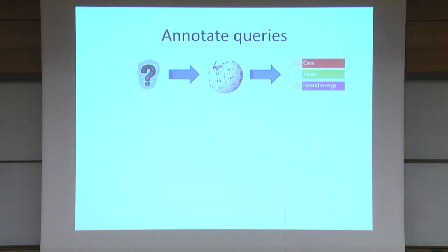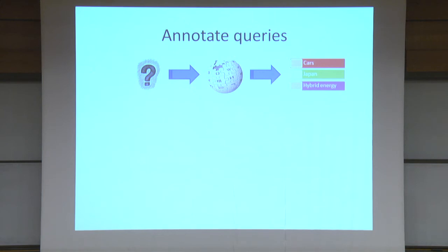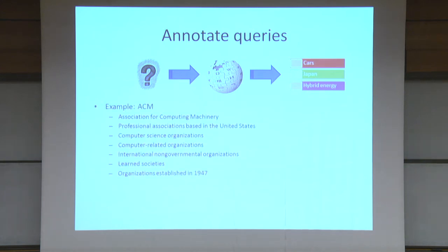Now the next stage is to annotate the queries. What we want to do in this stage is to say: when somebody asks about a dating site, they don't just mean this specific dating site — they might mean dating sites in general. So we start with user queries and look for all the cases where that query resulted in the user clicking on a Wikipedia page. If enough people did that, we say that there is a mapping from the query text to that specific Wikipedia page. Then each Wikipedia page has a set of categories, so we'll annotate it with those categories. For example, if we look at the query 'ACM,' that will be annotated with categories ranging from very specific ones like 'Association of Computing Machinery' to very general ones like 'learned societies.' So now each query is represented both by the text of the query itself and by these general categories.